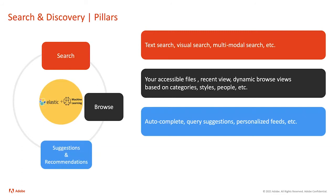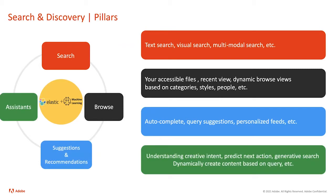You get those personalized feeds, and you'll see some of that in action in the coming slides. The last pillar is assistance: can we understand the creative intent of a user, predict their next action, and enable generative search — where based on your query, we generate at runtime images that match what you're looking for. So the four pillars are search, browse, recommendations, and assistant.